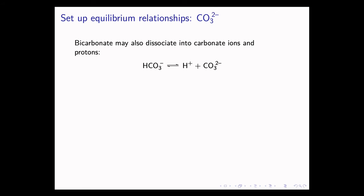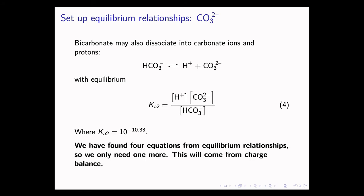The second equilibrium in the carbonate system is the bicarbonate going to carbonate equilibrium. This follows the equation seen, and this is the equilibrium relationship. Ka2, again, is another constant, 10 to the negative 10.33. So we have found four equations that come from equilibrium relationships. We only need one more, and this will come from charge balance.